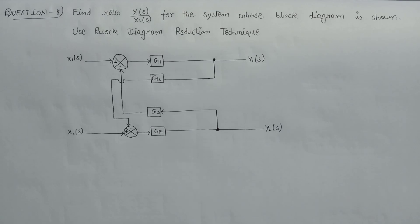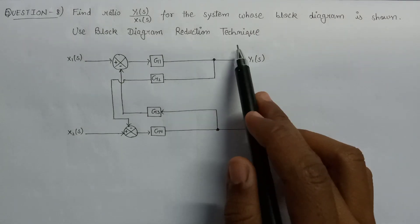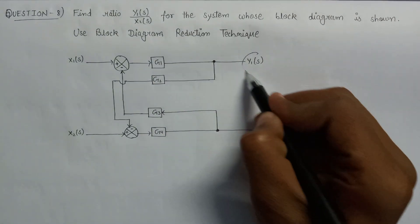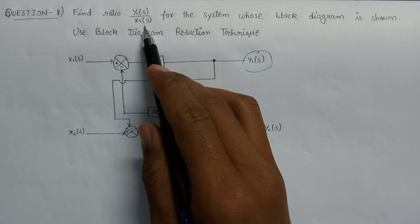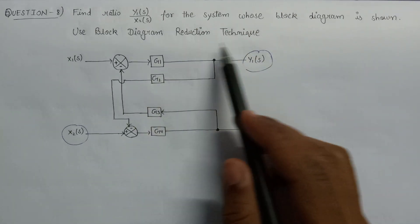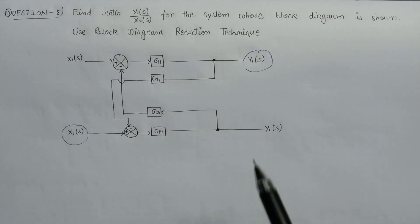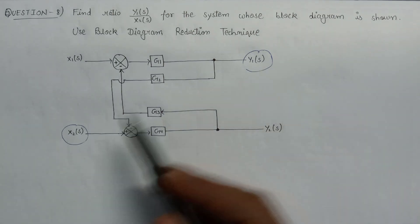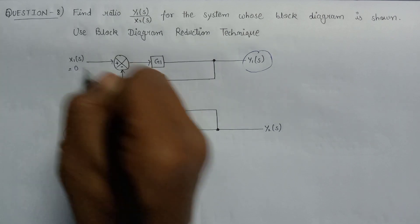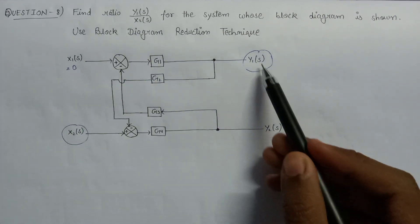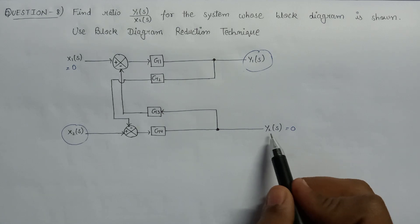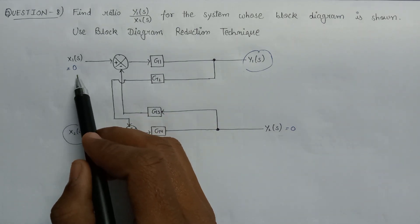Welcome. In this lecture we are going to solve a question based on block diagram reduction technique. We need to find the ratio of Y1(s) to the input X2(s) for the system whose block diagram is shown, using block diagram reduction technique. We assume X1(s) = 0 and Y2(s) = 0 since we only need to find Y1(s) over X2(s).